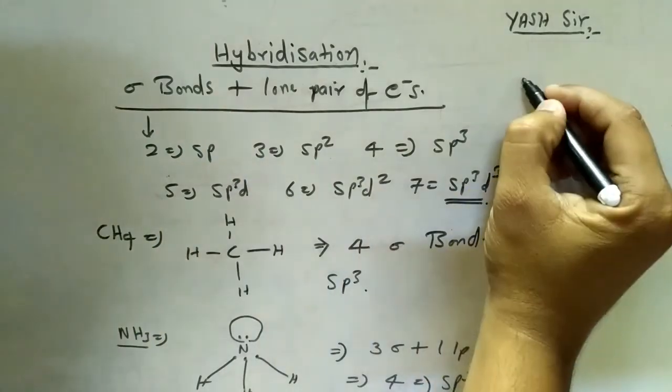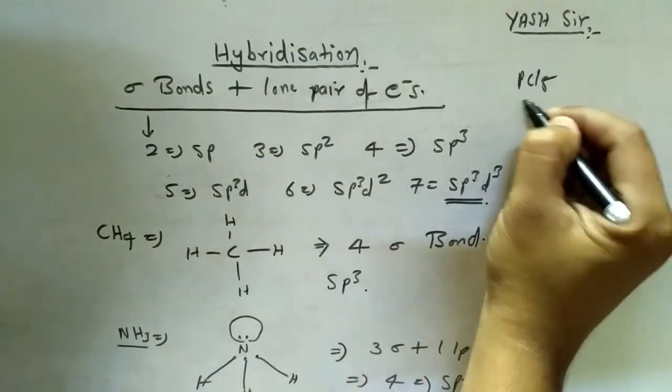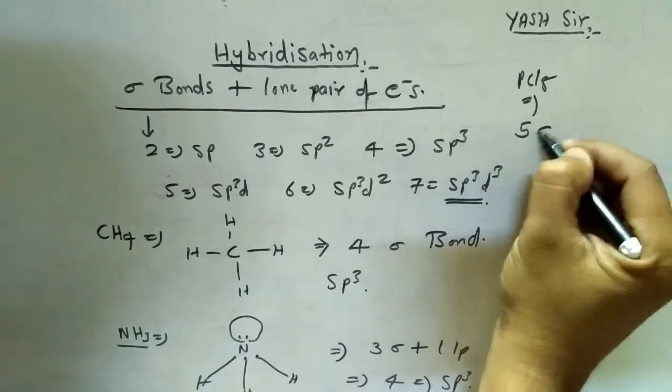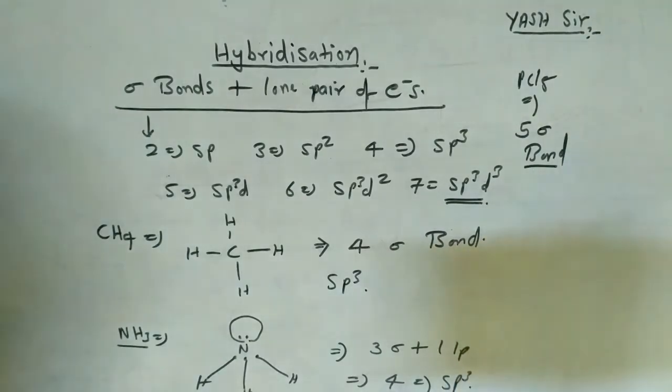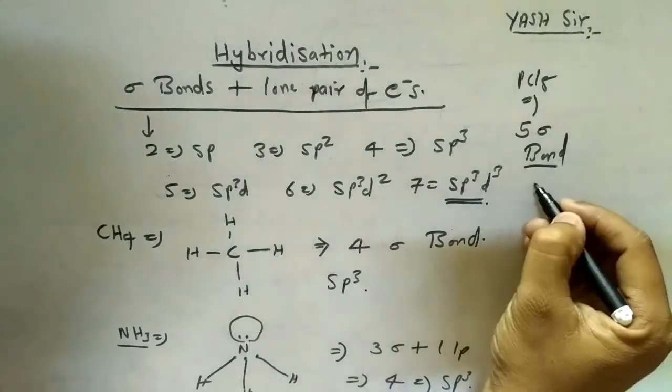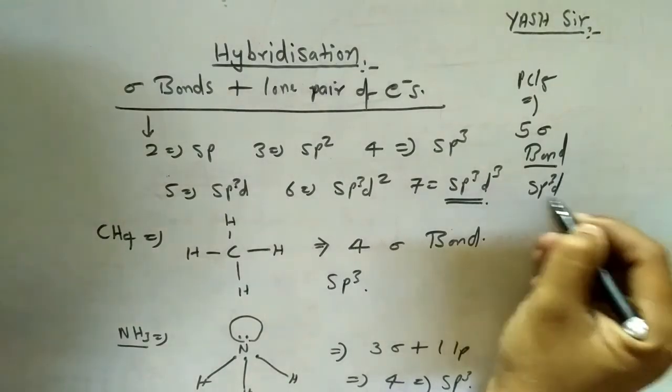You can say PCl5 with a total of 5 sigma bonds. So that's 5 sigma bonds total, and the hybridization will be sp3d.